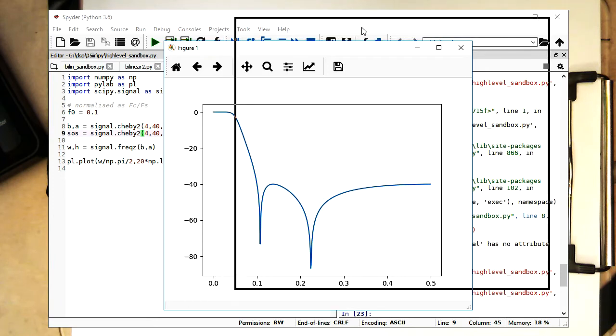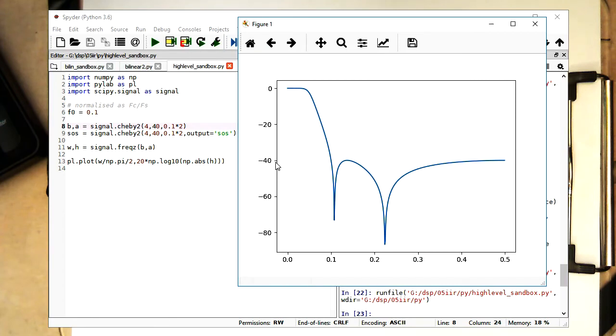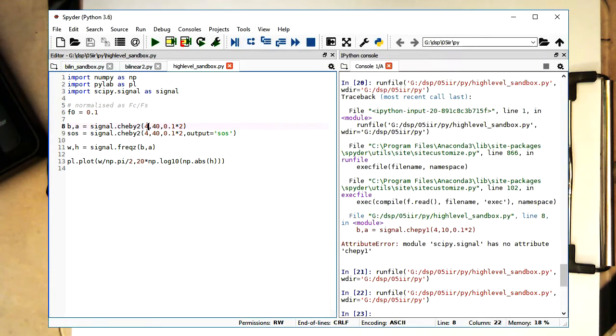So 40 decibel requested damping. And we see here it drops down, down to 40 decibel here straight away. And then it's not getting higher. If you are increasing, increasing the order.